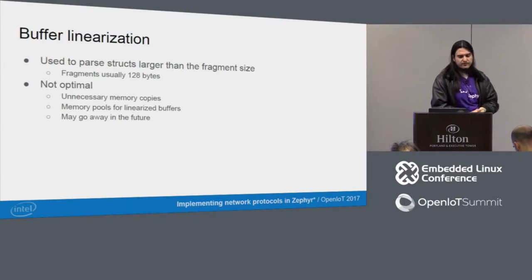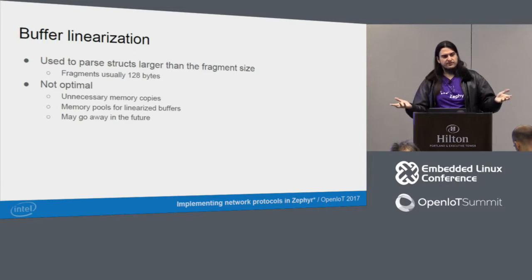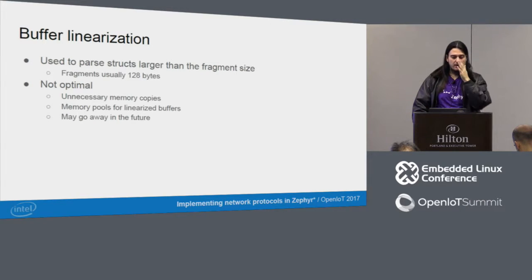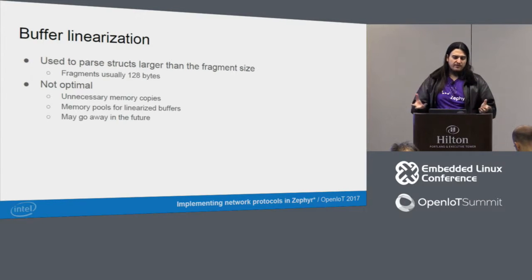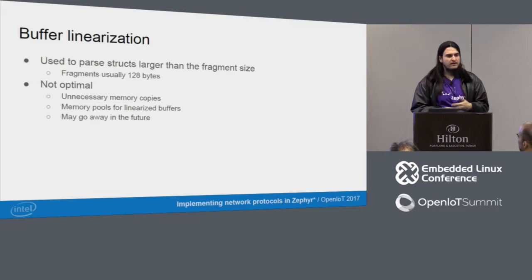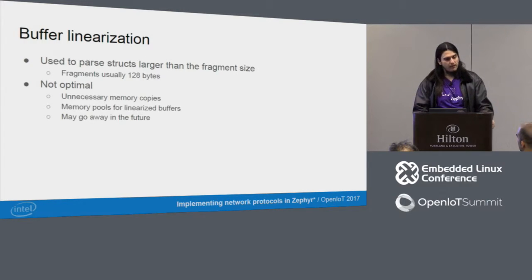We have the linearization of buffers for structs that are larger than the fragment size of 128 bytes. Currently, the only thing we have that does this is the DNS queries. We don't use it broadly because it's not optimal — we have to have memory pools for large buffers and there are unnecessary memory copies. It may even go away in the future, but it's a necessary evil at the moment.